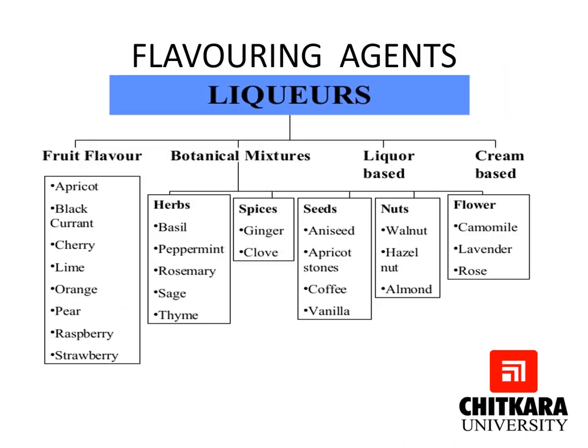The flavouring agents used in liqueurs are of various types. For fruits we have cherry, lime, orange, raspberry, and strawberry — these are just a few basic names. Then we have herbs like basil, peppermint, rosemary, and thyme. Then spices like ginger and clove. Then seeds like aniseed, apricot, coffee, and vanilla. Then nuts like walnut, hazelnut, and almond. Then flowers, which are also used in some liqueurs, like chamomile, lavender, and rose. So a liqueur can be fruit flavoured, it can have botanical mixtures, it can be liquor based, or it can be cream based. Cream based can be dairy cream or fresh cream.